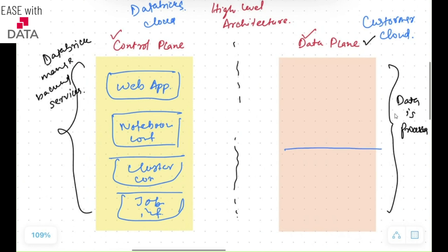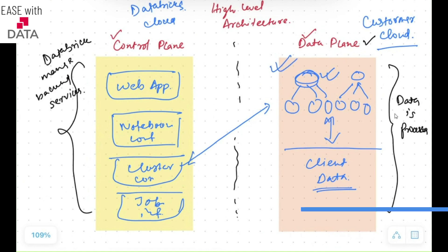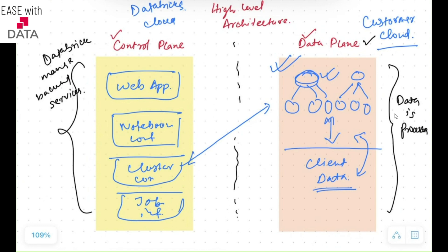The data plane consists of the client's data. Whatever data the client has will always be available on the customer's account only — the data will not be present at the control plane side. The clusters you create to process this data will also be created at the customer's account. These clusters are managed by the cluster configuration from the control plane and run in the data plane to process the client's data, saving it back at the client's cloud account only. There will be no data movement, but configurations and access are managed through the control plane.